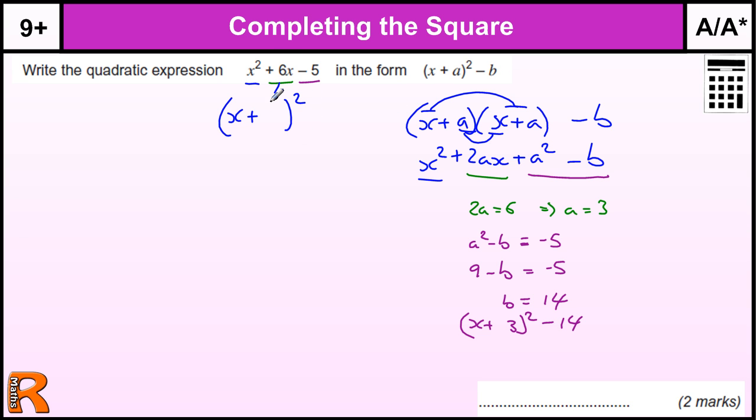that this number here, the 6, comes in here, and we half it to get 3. It's always half that value. Because this is always going to be 2A is equal to that number. So that's always going to be half.